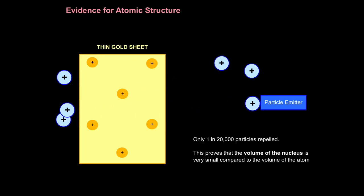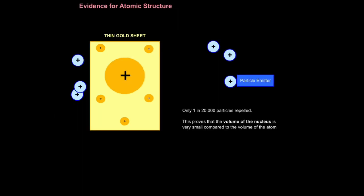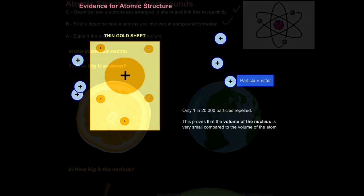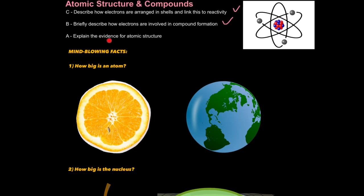What does this mean? Well, only 1 in 20,000 particles were repelled. This proves that the volume of the nucleus is very small when compared to the overall volume of the atom. Remember, the reason why they repelled is because alike charges repel. And of course, logically, if the nucleus of an atom was much larger, then you'd expect far more collisions and repulsions. And that's explaining the scientific evidence for atomic structure. Last aim done.